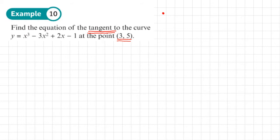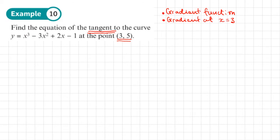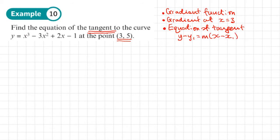The first step is to find the gradient function — the derivative. Once we've found the gradient function, we substitute x equals 3 to find the gradient at that point. We don't need the y coordinate for this step. This gives us the gradient of the tangent at x equals 3. Once we have the gradient, we find the equation of the tangent using y minus y1 equals m times x minus x1, where m comes from dy/dx and x1, y1 come from the given point.